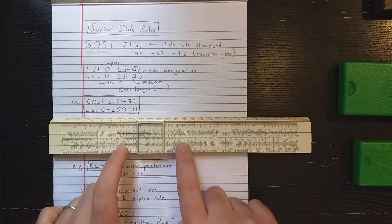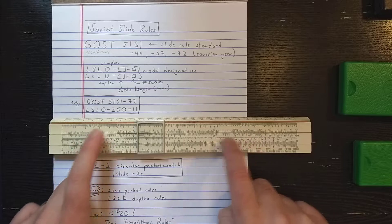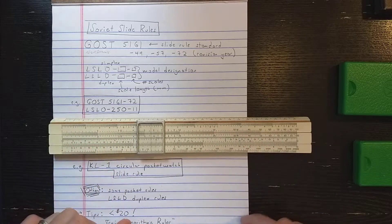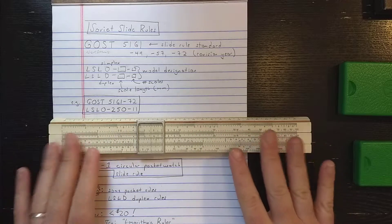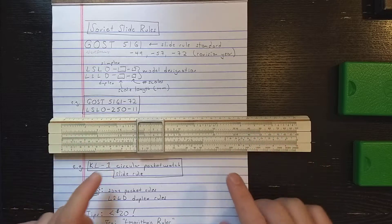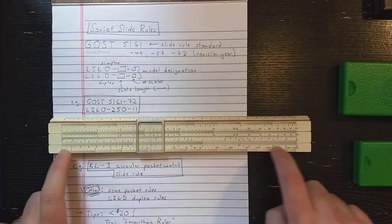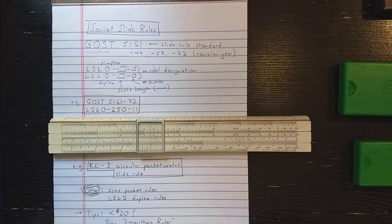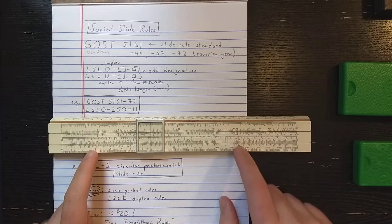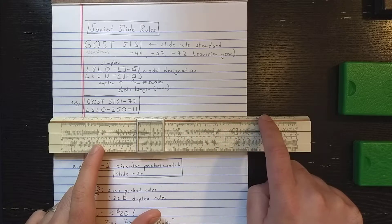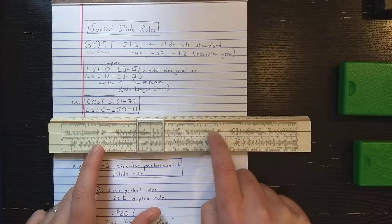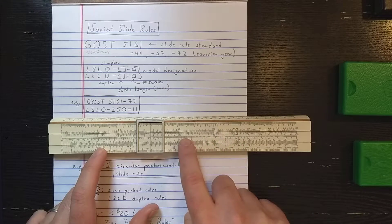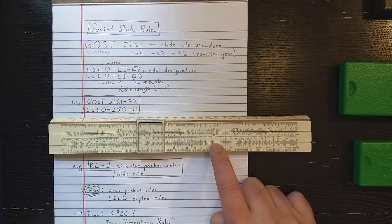You'll see some variations with railroad track divisions instead of these standard divisions. You'll see some very early ones where this scale on the bottom is an L scale, which makes it an actual Rietz design slide rule. This slide rule is not really a Rietz design. It doesn't have any scale names here, but this is a K scale, an A scale, a B scale, a CI scale, a C scale, and a D scale.